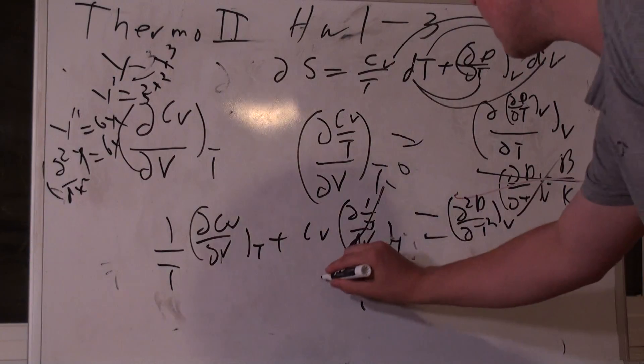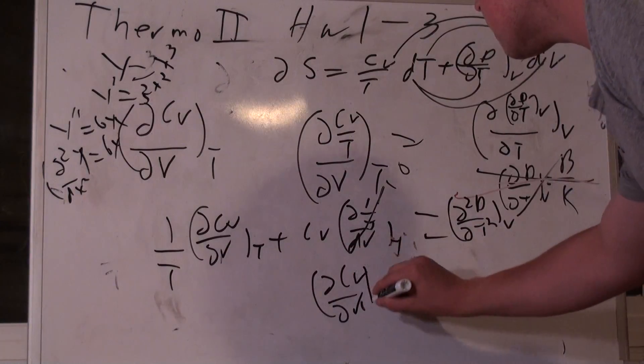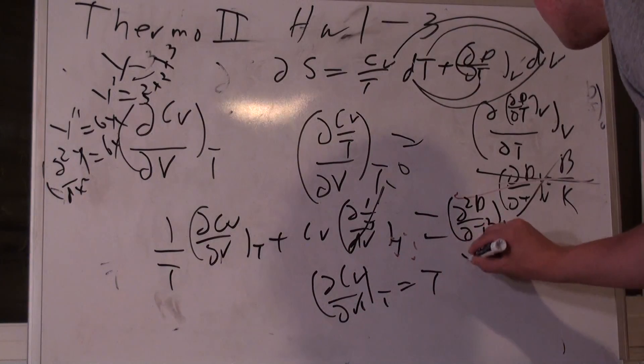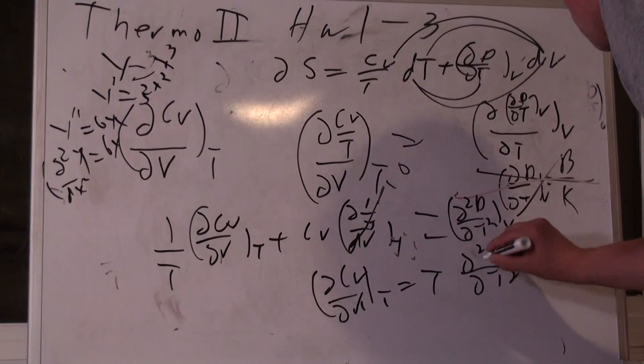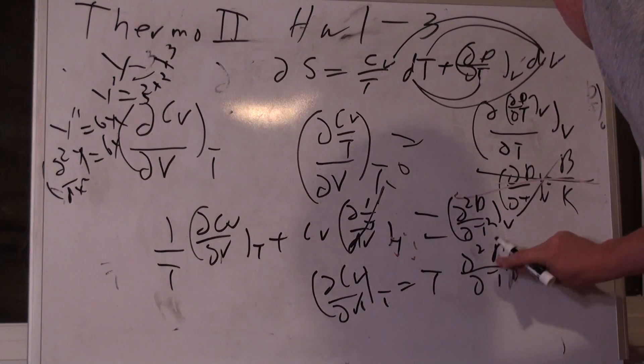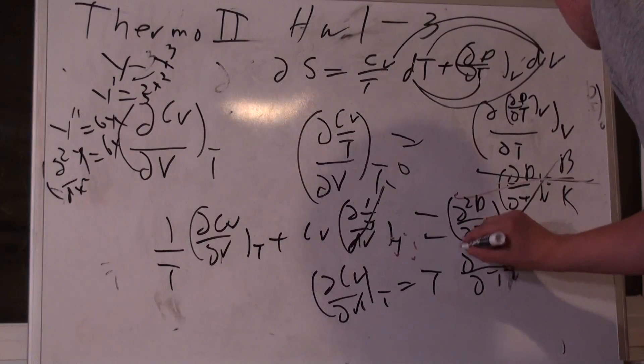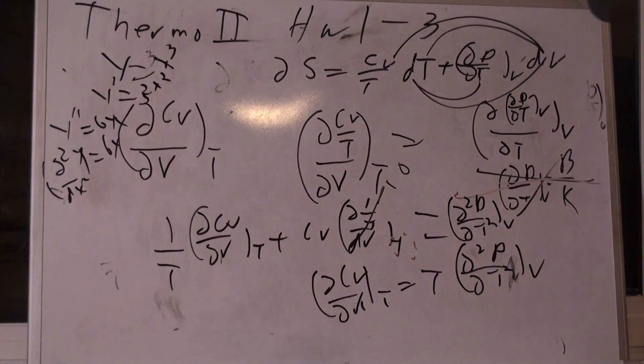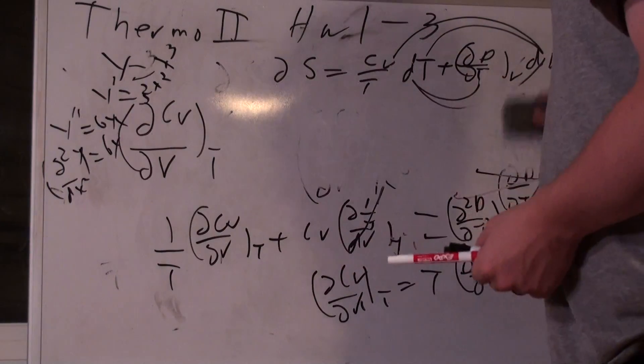So, we move things over and I get dCV/dV at constant T is equal to T times d²P/dT². Squared. That's a V. Alright. Alright. Well, I don't have any dS's. I don't have any HTCs. I don't have any functions. You have properties, measurables, or equations of state. Well, I already said an equation of state. So, let's do the equation of state. Okay. Let's see if you can raise some of this nonsense.